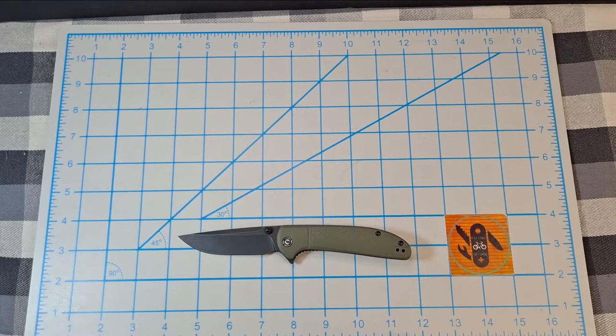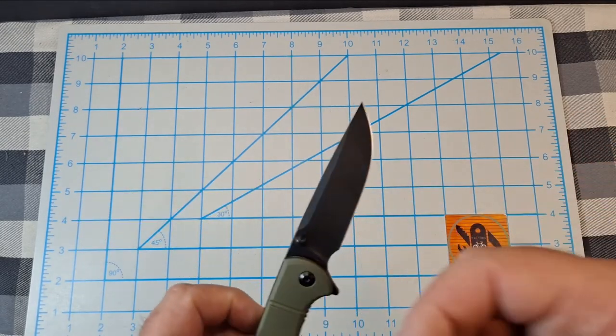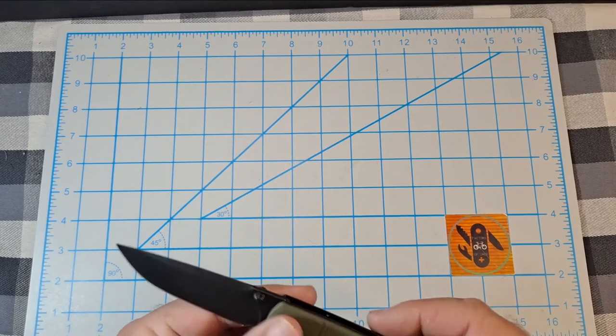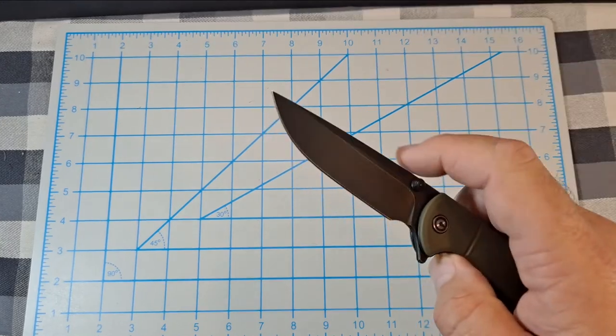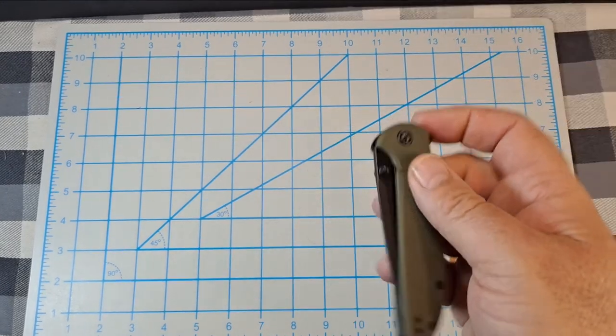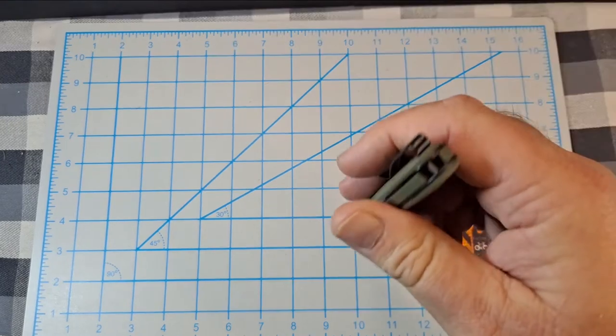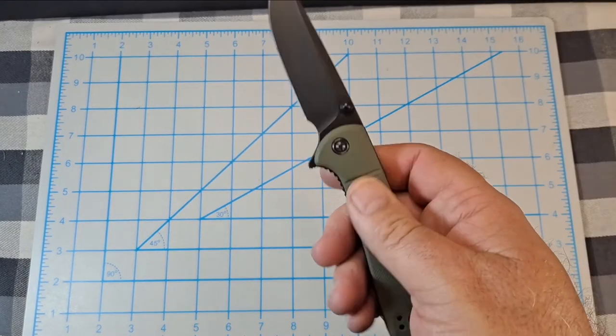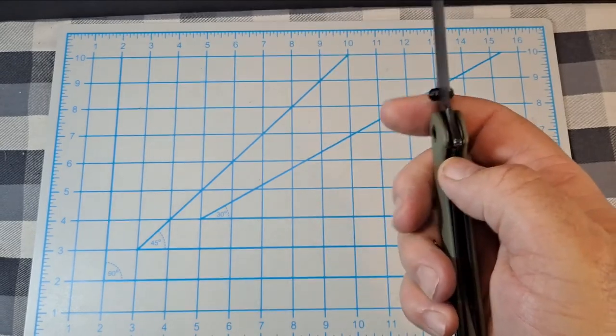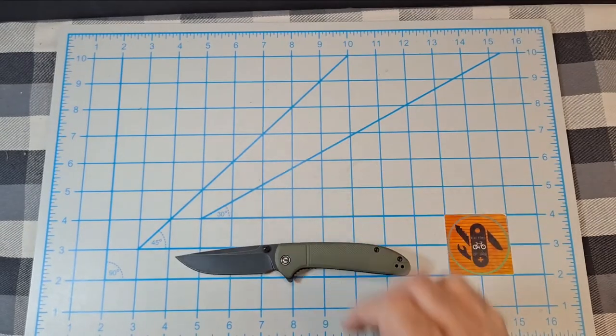But that's, I guess that's about it man. $39.95. 9CR 18MOV steel blade, thumb studs, bearings, or thumb studs, flipper tab, ceramic ball bearings, nice liner lock, backspacer, lanyard hole, awesome pocket clip, probably the best FRN scales out there that I've seen. I think it's a pretty sweet knife. So if you stuck around this long, give this video a thumbs up.